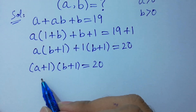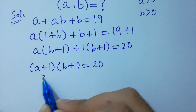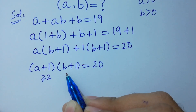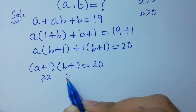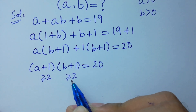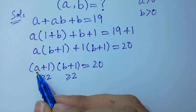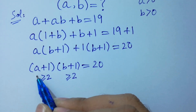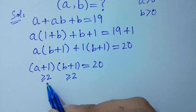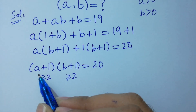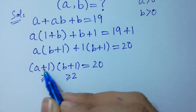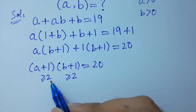Now, a plus 1 is greater than or equal to 2, and b plus 1 is greater than or equal to 2. Because if a equals 1, then a plus 1 equals 2; and if a equals 2, then a plus 1 equals 3, which is greater than 2. So both factors must be at least 2.